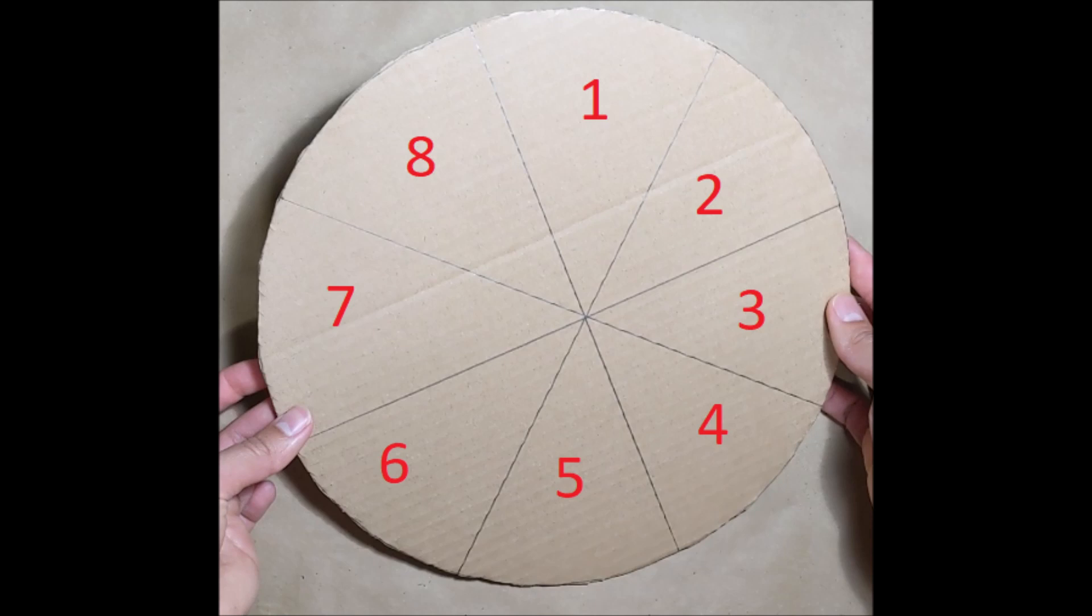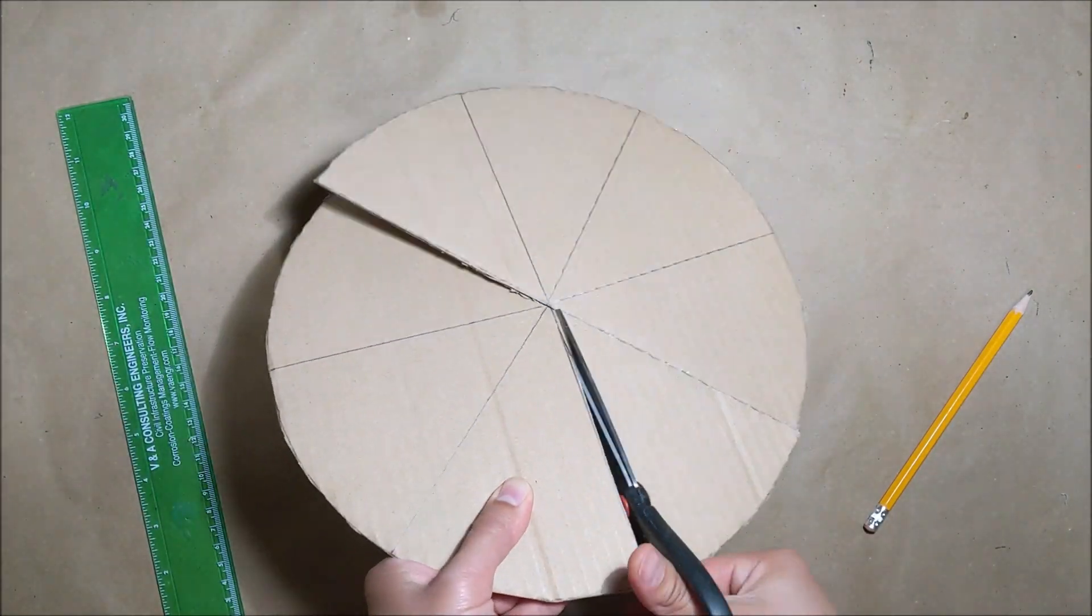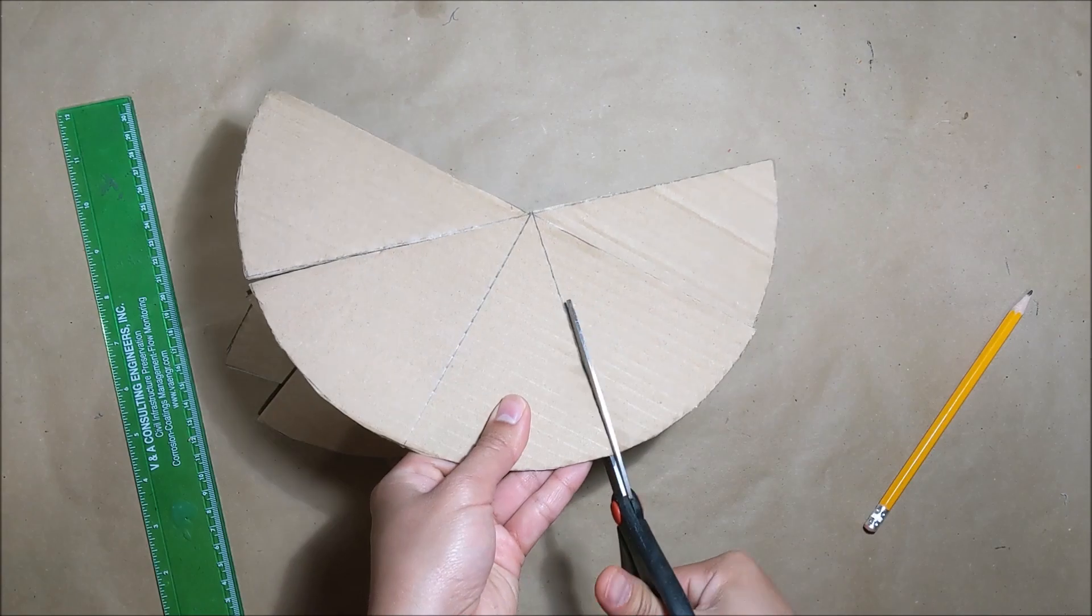So I realized it was really difficult to put together my pizza at the end because all my pieces weren't really exactly the same size. So before cutting your slices out make sure to number your slices like this. Now let's cut the slices out. See how my cardboard sometimes makes those bends and creases? Just be careful.